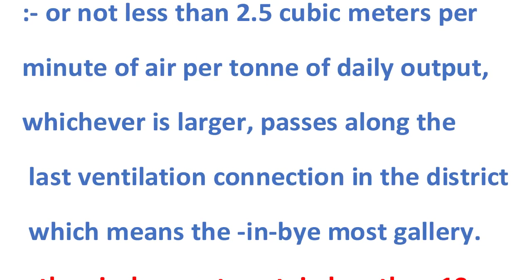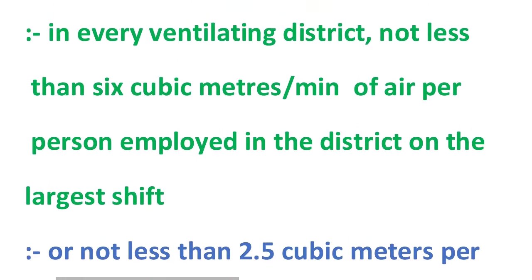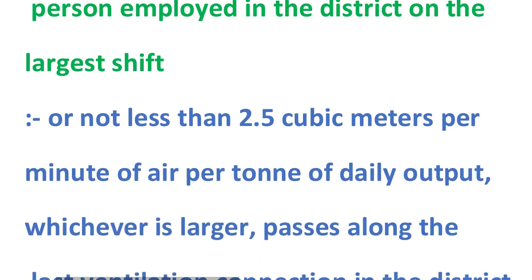Hum log yeh ensure karenge ki kissi bhi ventilation district mein 6 cubic meter hawa pratiwyakti, sabse badi largest shift ke hisaab se ho — usse kam nahi honi chahiye. Aur ek ton daily output par bhi ek specified cubic meter per minute ke hisaab se hawa deni hai — jo bhi zyada ho, woh measure consider kiya jayega.